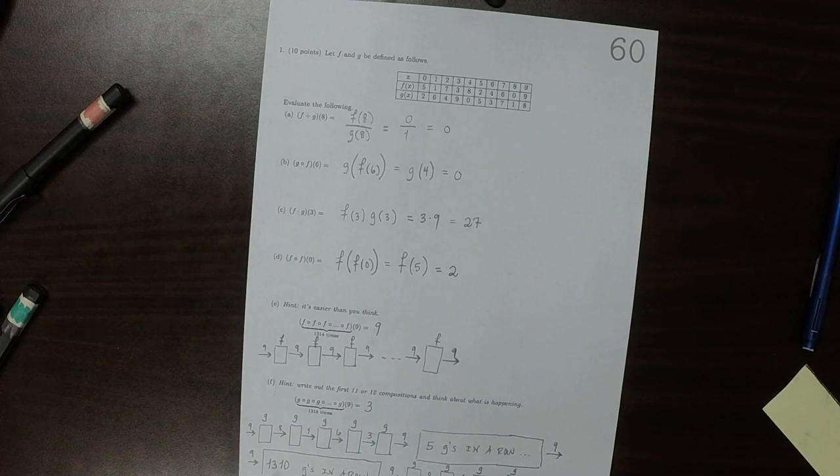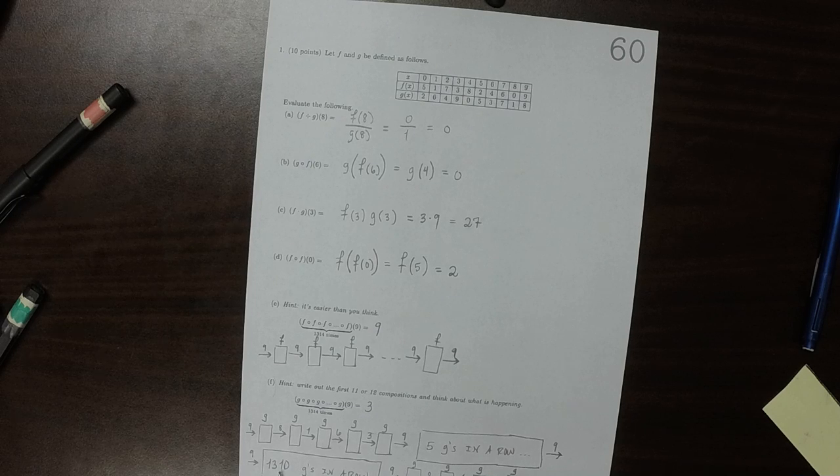Because the first 1,310 g's did nothing, and then the next 4 ended up giving us a 3.